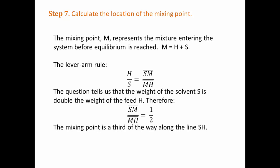Therefore, H over S is a half, and SM over MH is a half. This means the distance from M to H is double the distance from S to M.